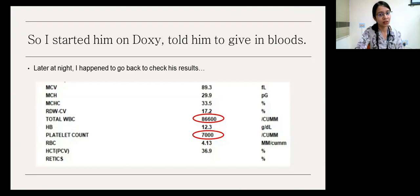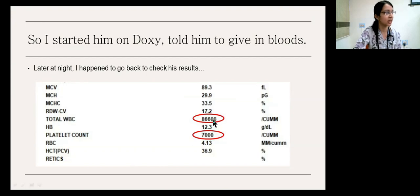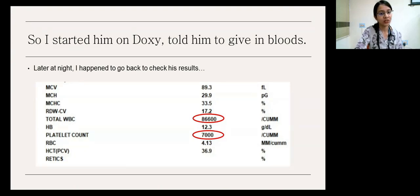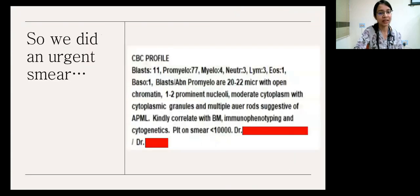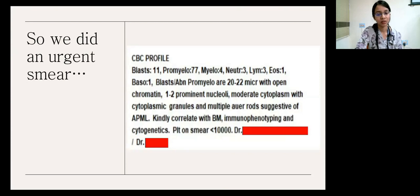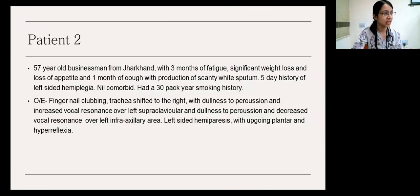I started him on doxycycline and told him to give his bloods. He requested not to be admitted and said he would follow up his bloods with us the next day. Later that night, I checked his results — he had a total WBC count of 86,600 with a platelet count of 7,000 and hemoglobin of 12.3. The first thing you think of is leukemia. We asked for an urgent peripheral smear in the middle of the night, and it was reported as 77% promyelocytes, 11% blasts, suggestive of APML — acute promyelocytic leukemia.